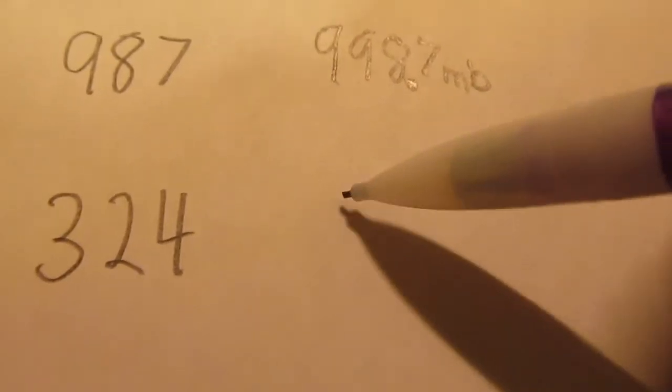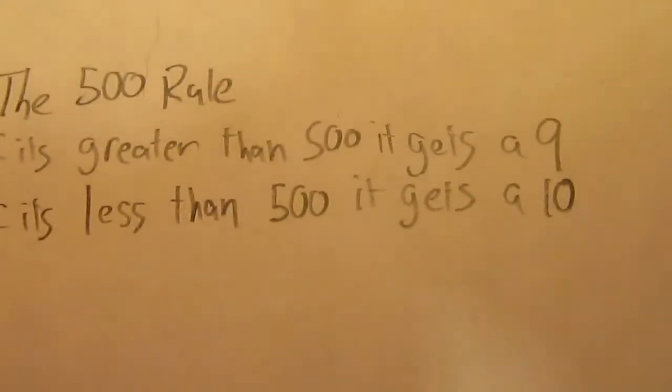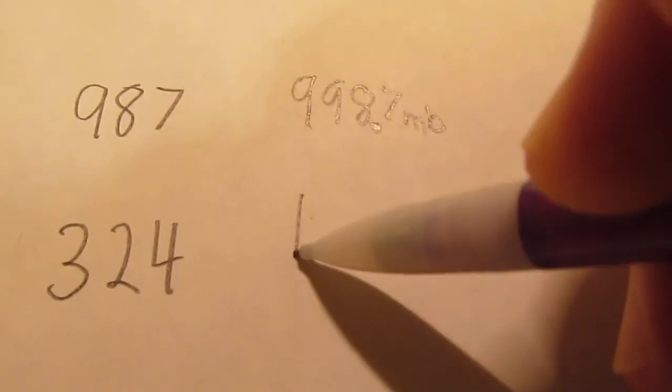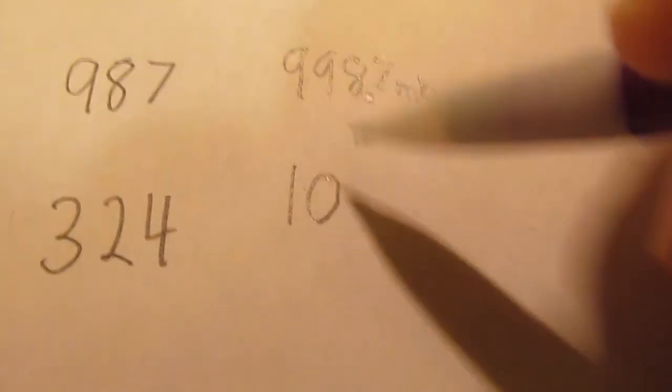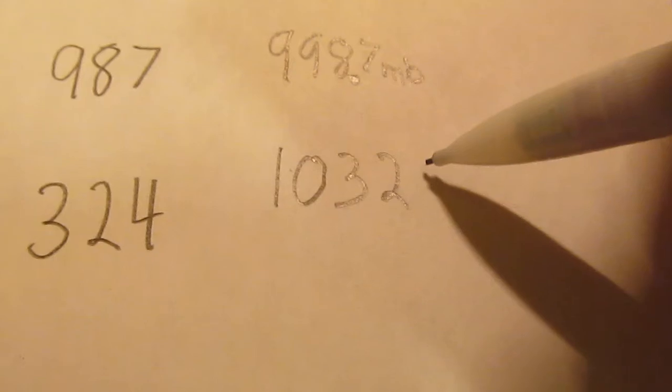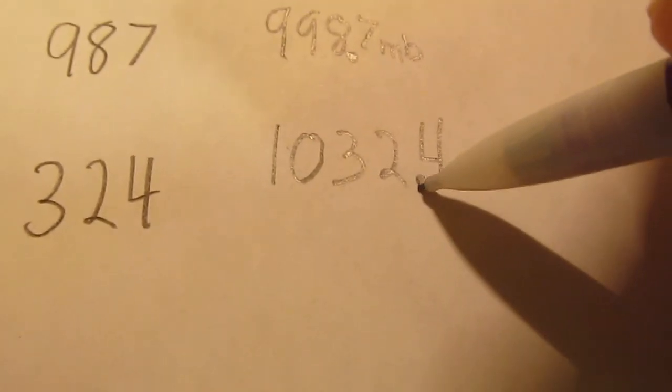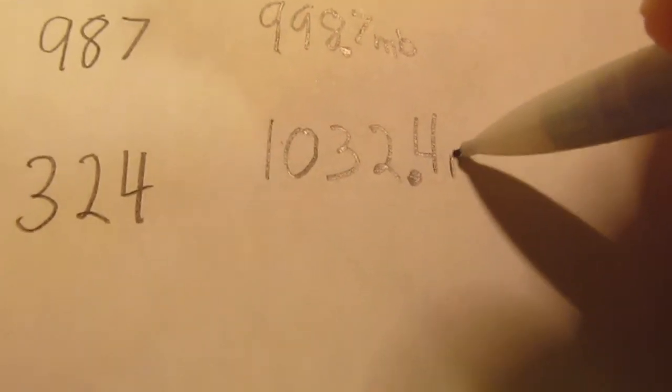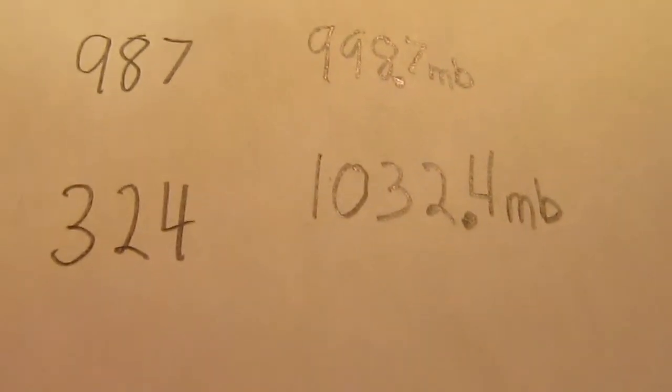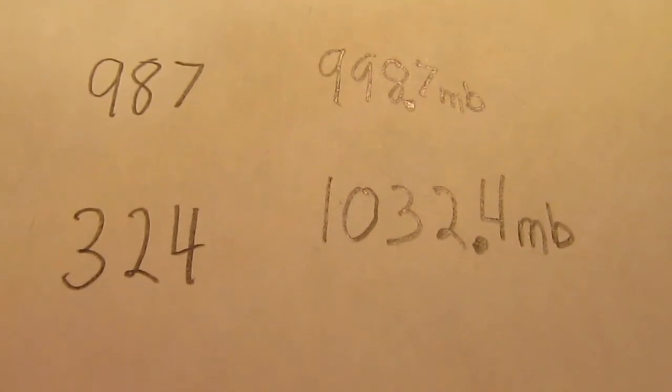The number underneath it, 324, well 324 is less than 500, so it gets a 10. So the number 324, I'm going to start off by writing 10, and then I'm going to put 324. Put your decimal point in between the last two digits and put mb. So 324 on the weather map symbol is 1032.4 millibars.